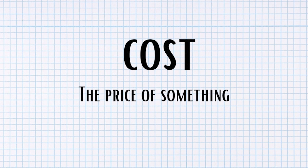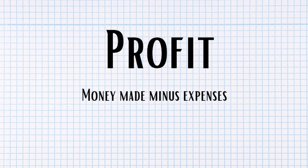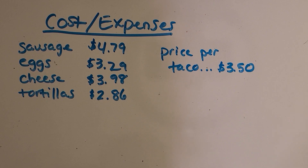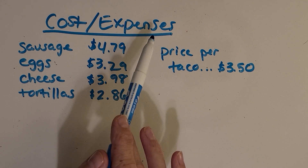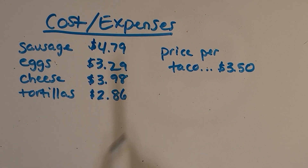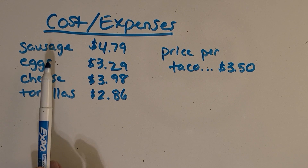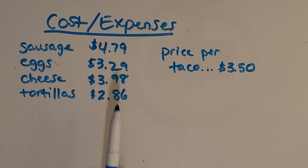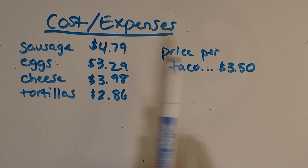Cost is the price of something. Profit is the money made minus expenses. Now that you know a little bit more about expenses — or cost — and profit, I can give you a little bit of information about my breakfast tacos.